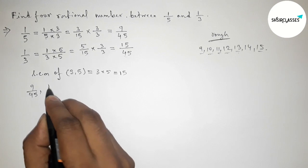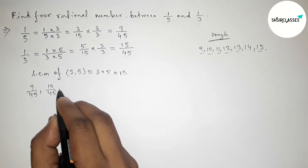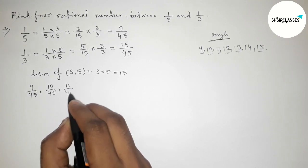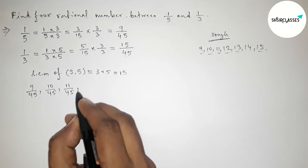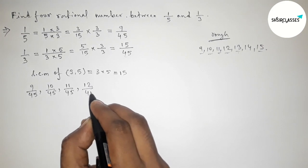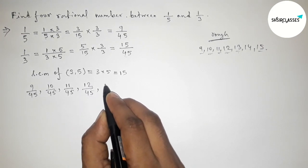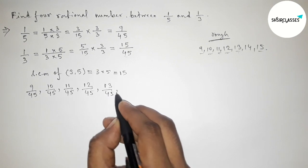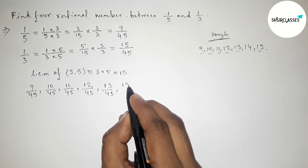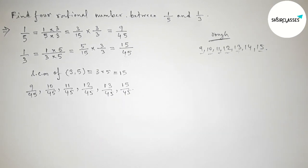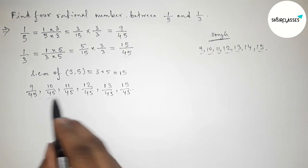The rational numbers between 9 by 45 and 15 by 45 are: 10 by 45, 11 by 45, 12 by 45, 13 by 45, and 14 by 45 — you can take any 4 of these as your choice.